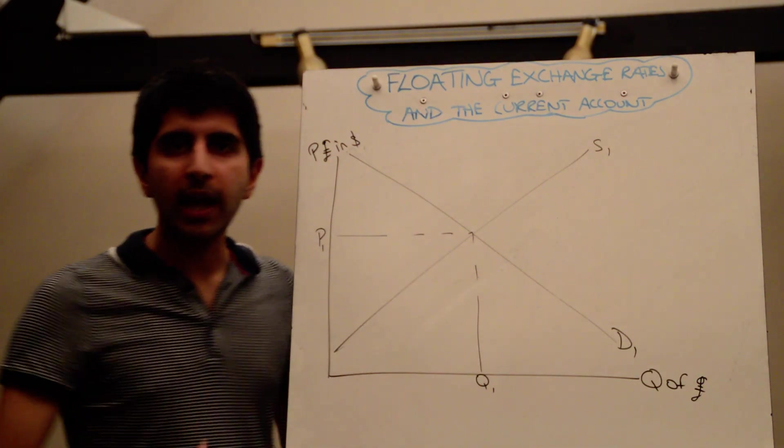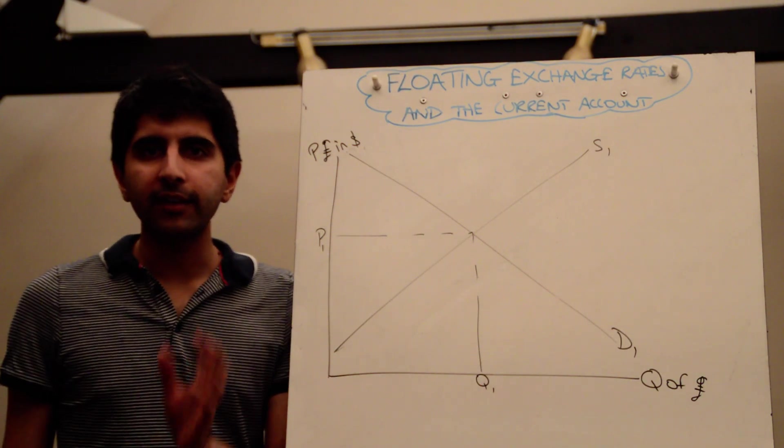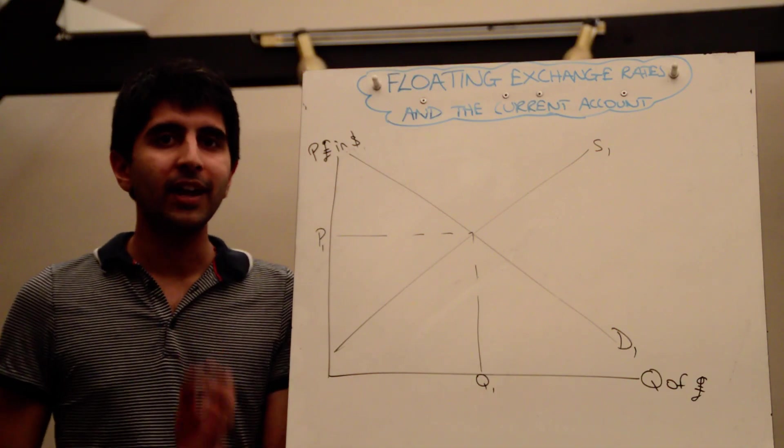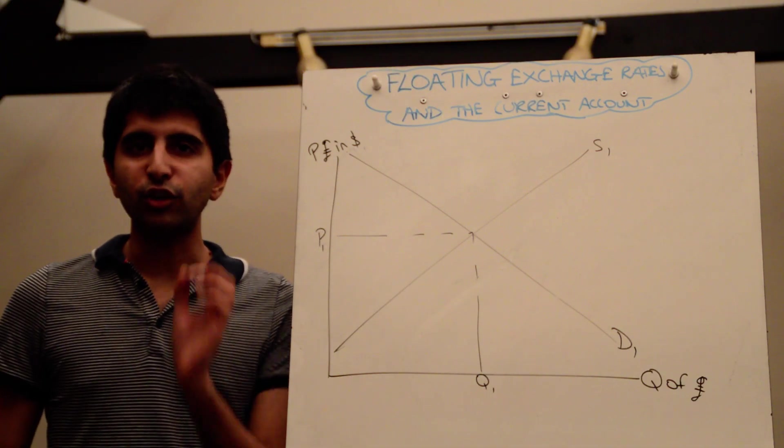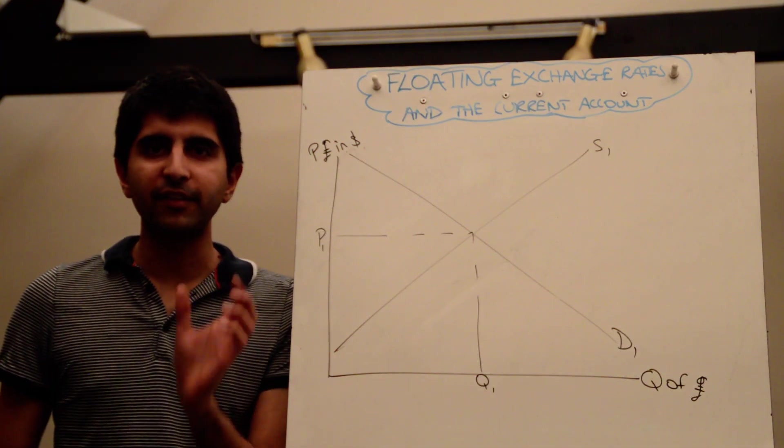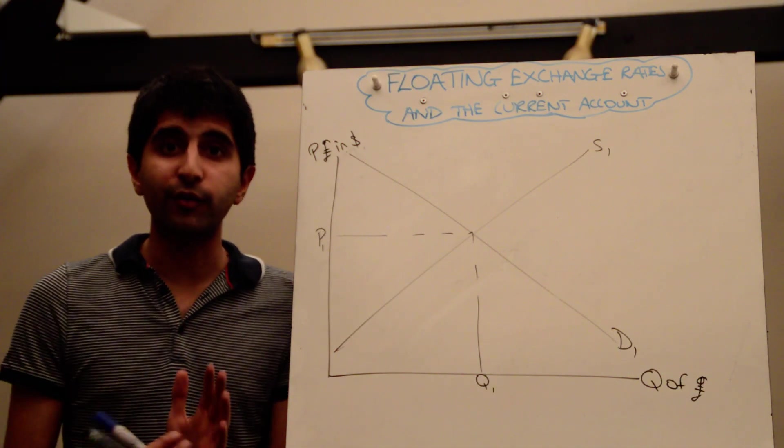Let's take the UK as our basic example. The UK has a large current account deficit and for most countries that have current account deficits that normally implies that the trade balance is negative. The trade balance is often the key determining factor of the current account, the overall current account position.